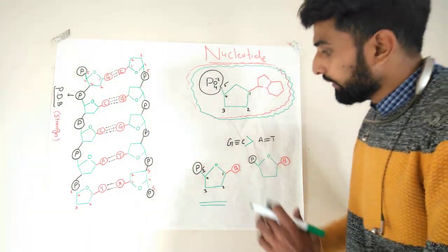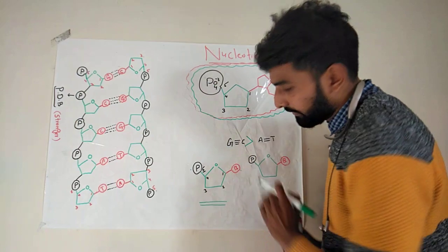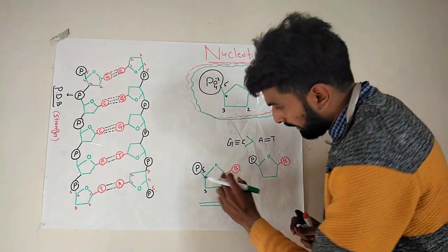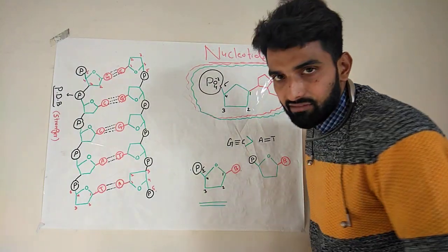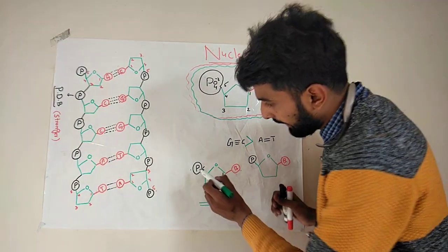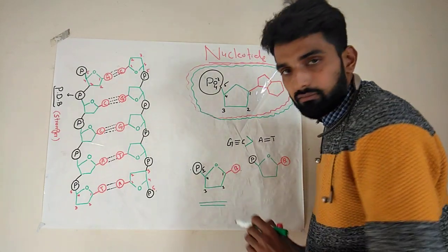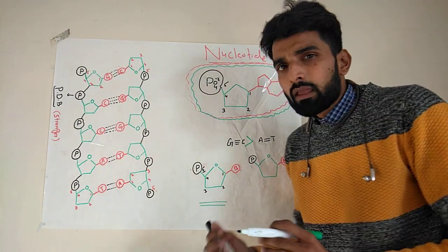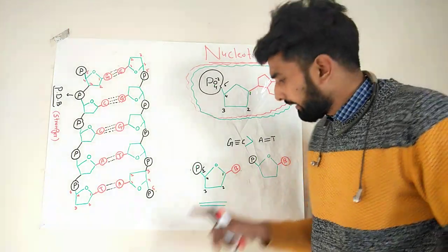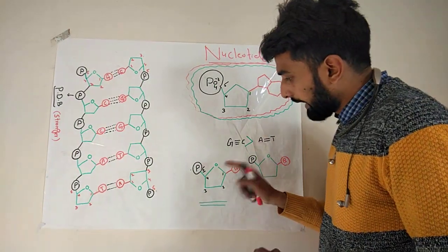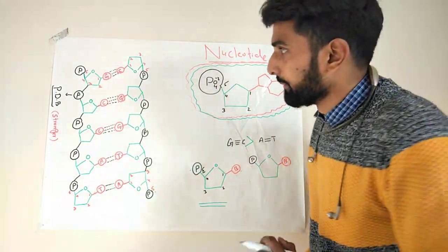In this video I will show the nucleotide in this way. The center is ribose sugar. P will indicate the phosphate group that is present on carbon number five of the ribose sugar, and B is basically a nitrogenous base that is attached with carbon number one of the ribose sugar.